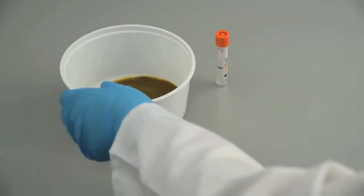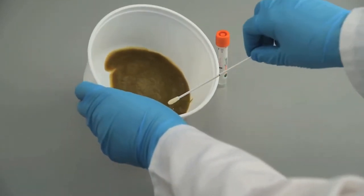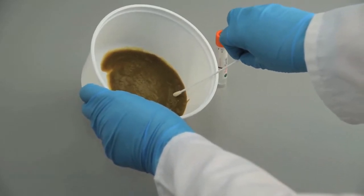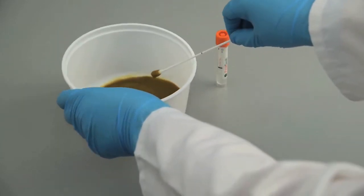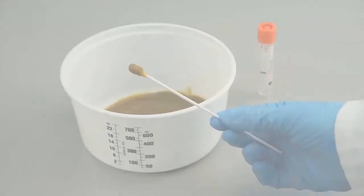Collect a small amount of stool by inserting all of the tip of the flocked swab into stool sample and rotate it. Bloody, slimy, or watery area of stools should be selected and sampled.